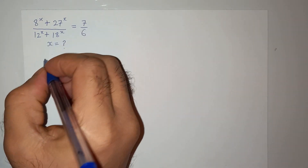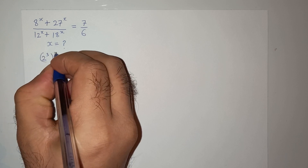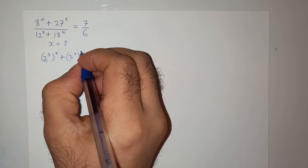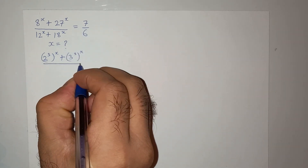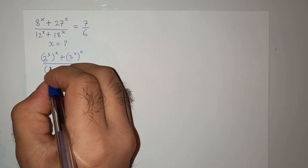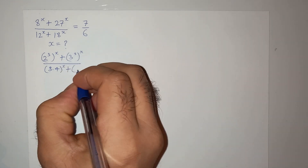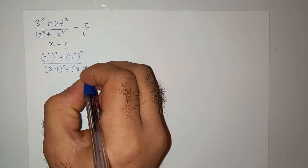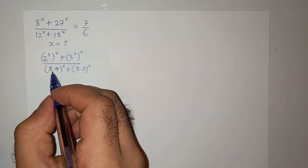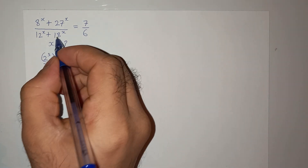We can write this as (2³)^x + (3³)^x divided by 3×4^x + 9×2^x. So 2³ is 8, 3³ is 27, 3 multiplied by 4 is 12, and 9 multiplied by 2 is 18.